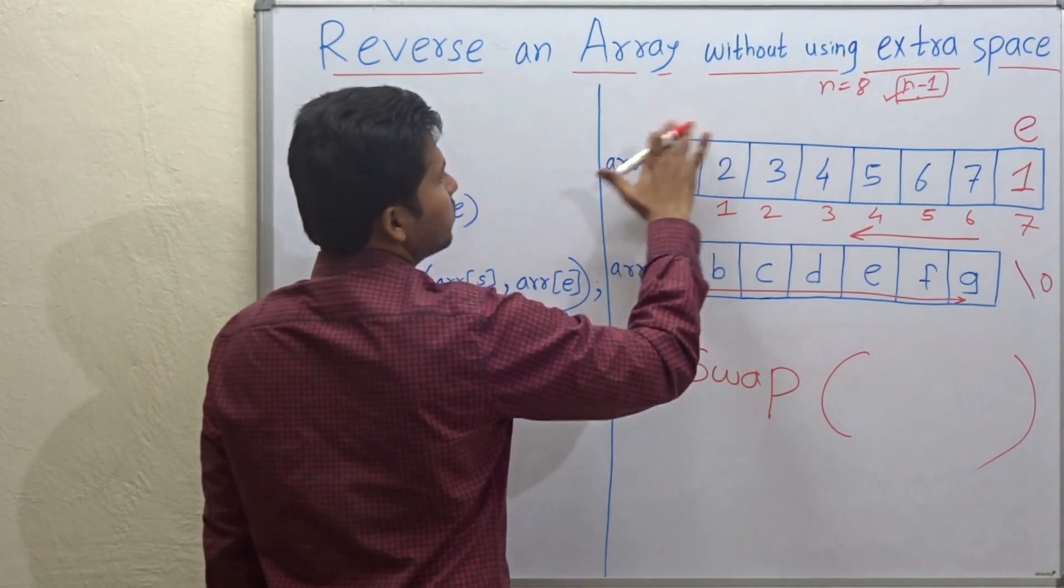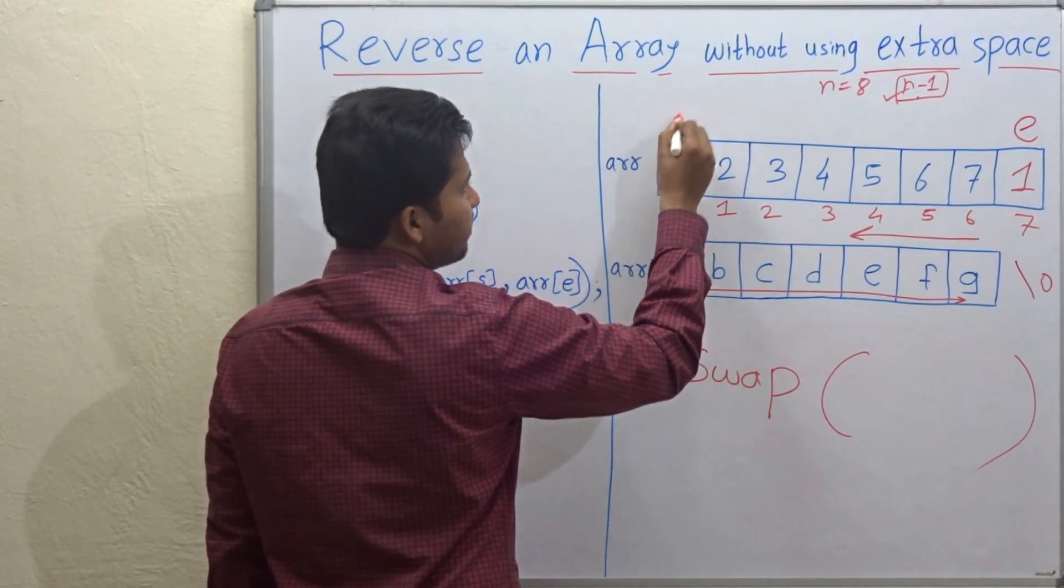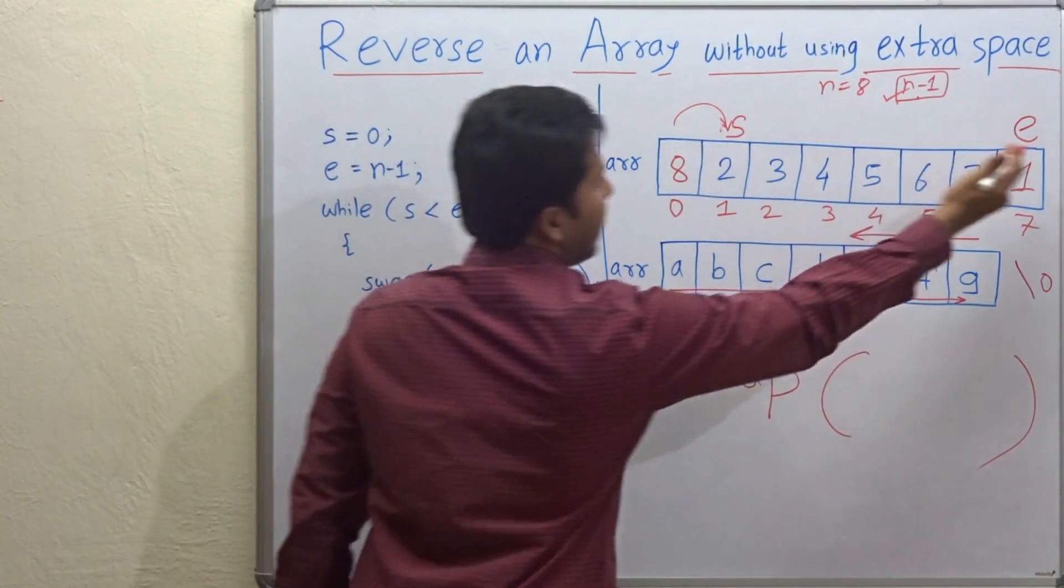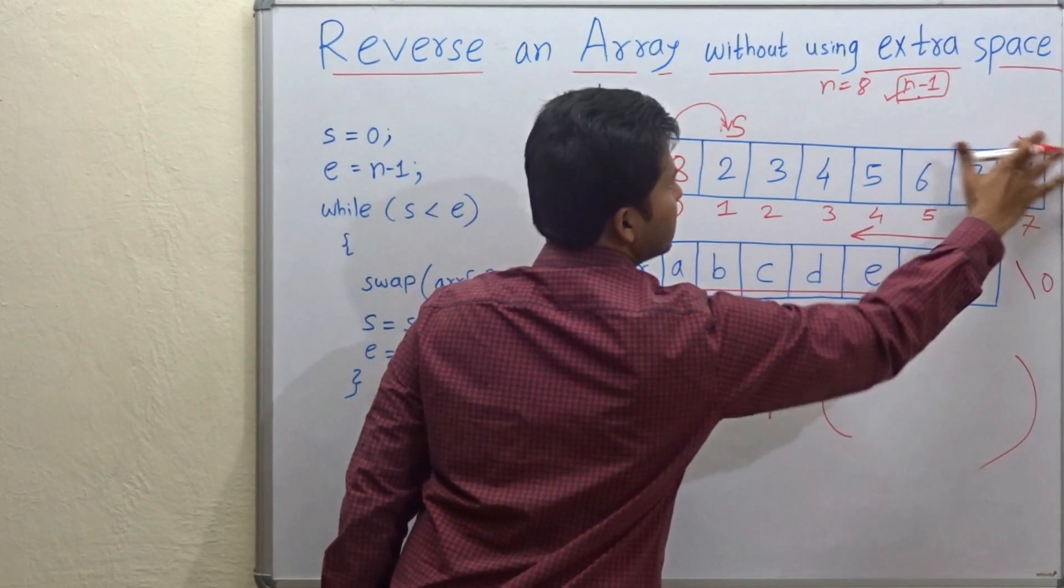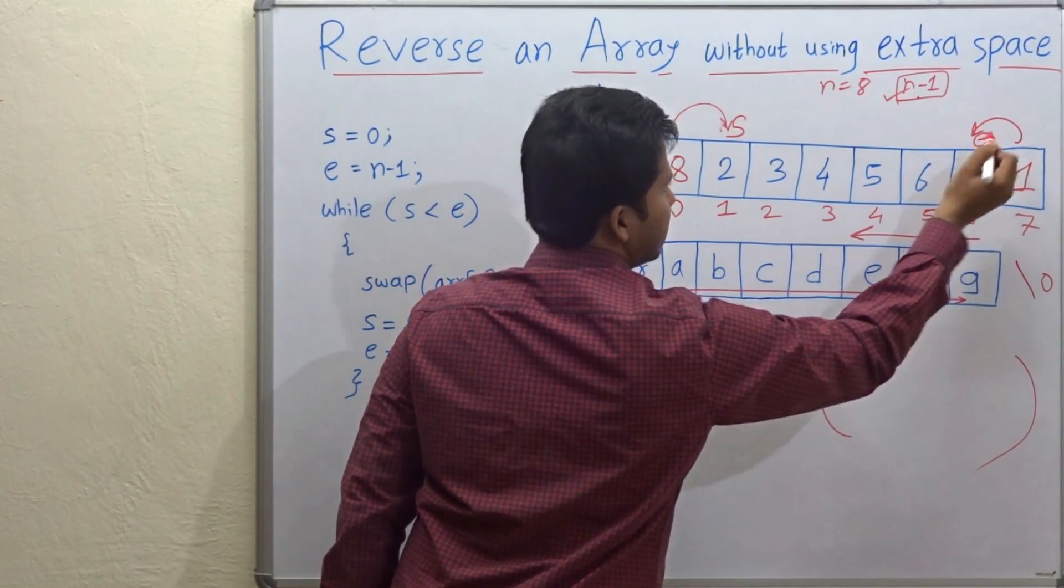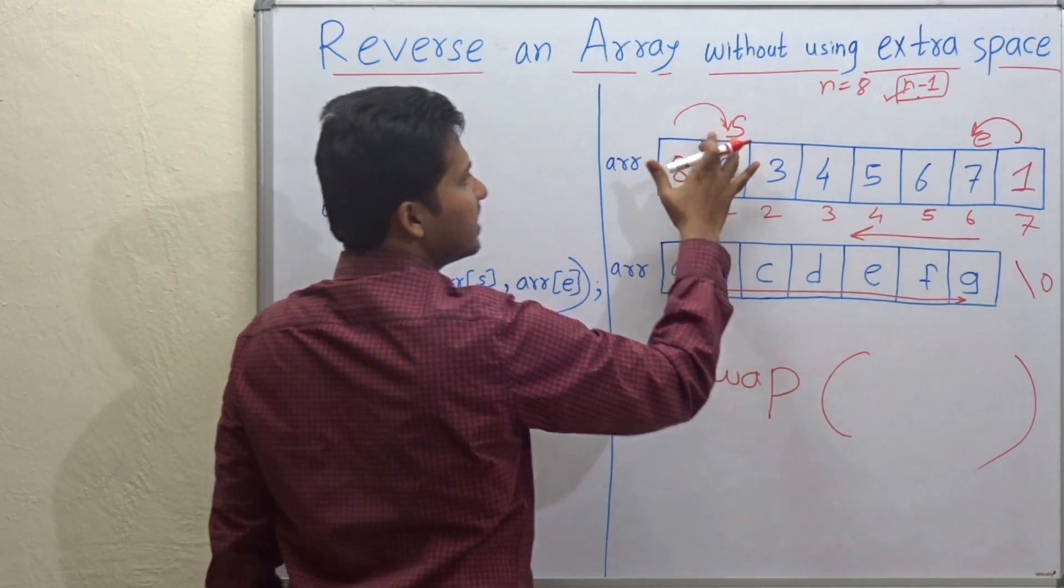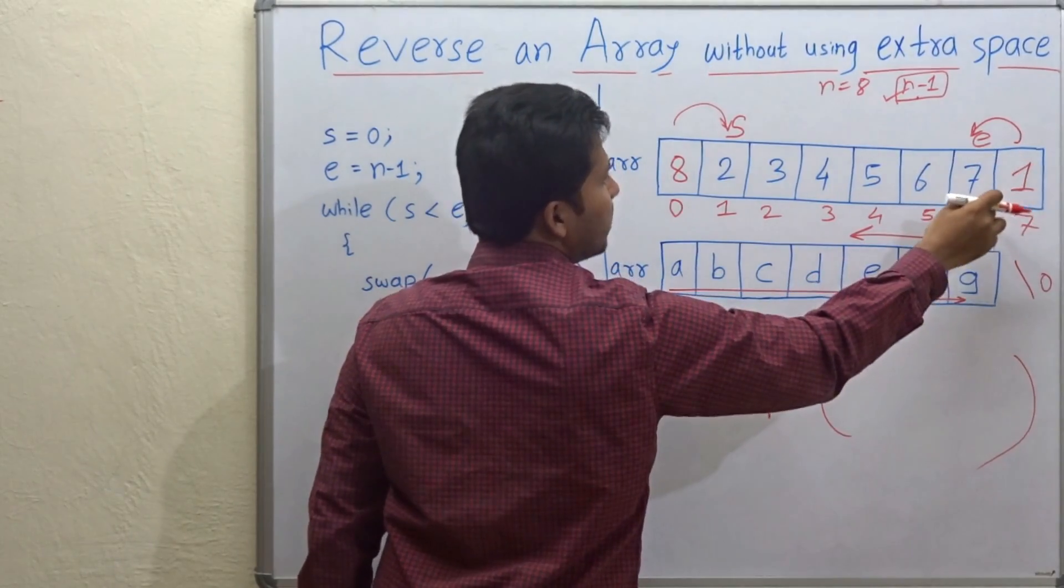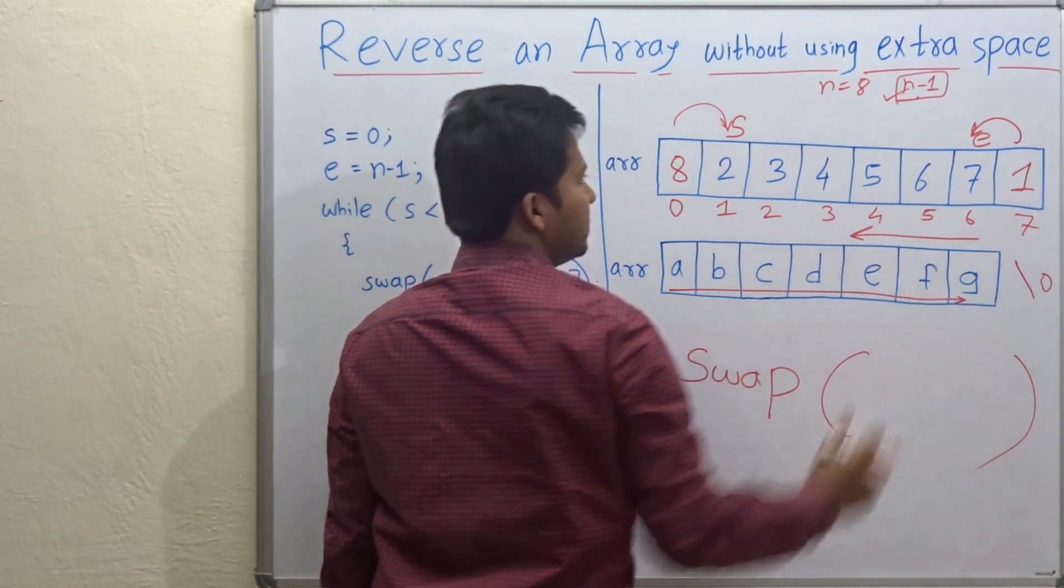Now after swapping, S equals S plus 1, increment S and decrement E. So E equals E minus 1. So E will be decremented. So S is pointing to the next position and E is now pointing to the backward next position that is 6th index.